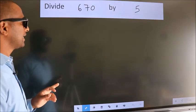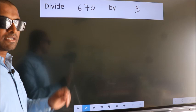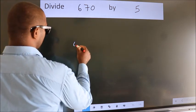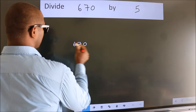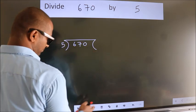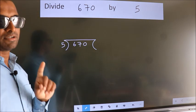Divide 670 by 5. To do this division, we should frame it in this way. 670 here, 5 here. This is your step 1.